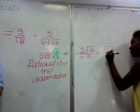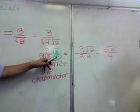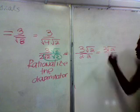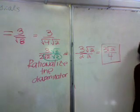And there's your answer. See, what happened is this right here, the root 2 times root 2 is equal to 2. And we have 2 times 2, and we're done. 3 root 2 over 4. And there it is, folks. That's called rationalizing the denominator.